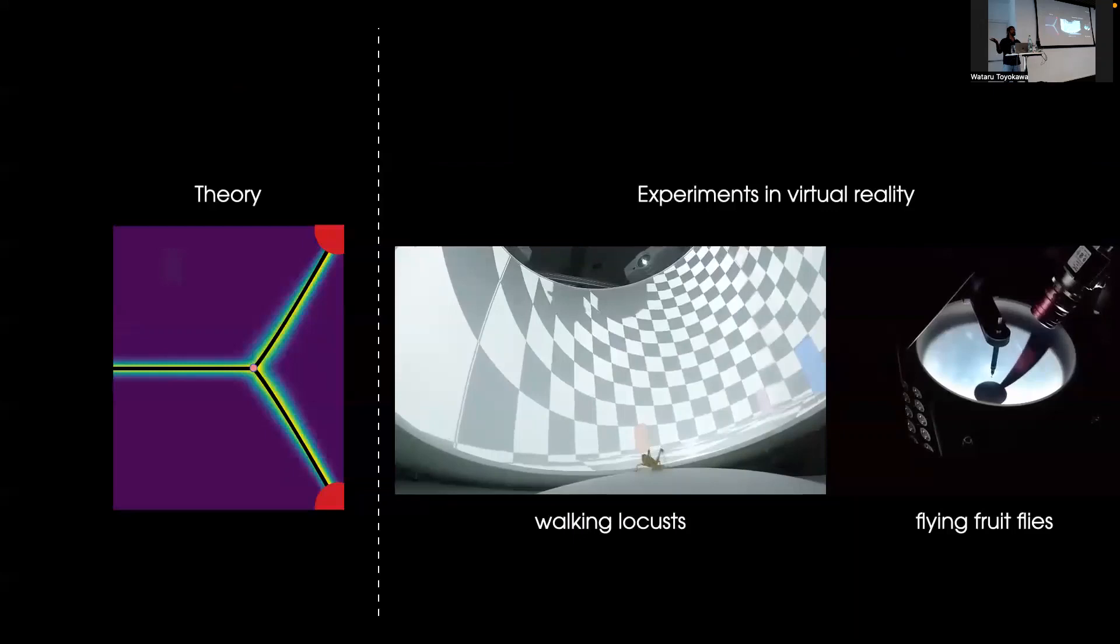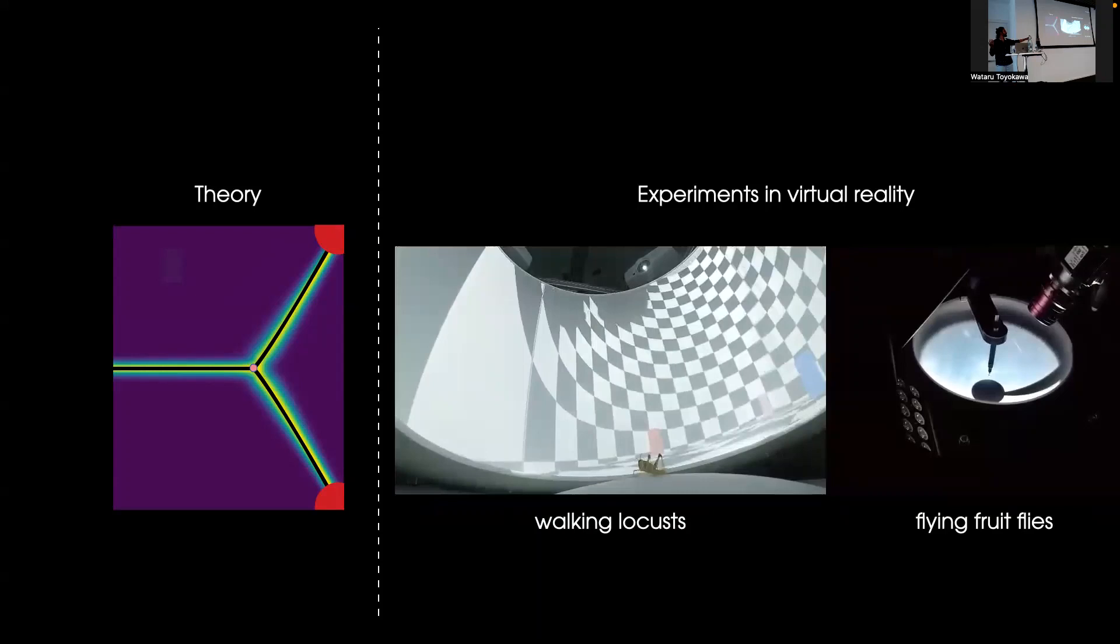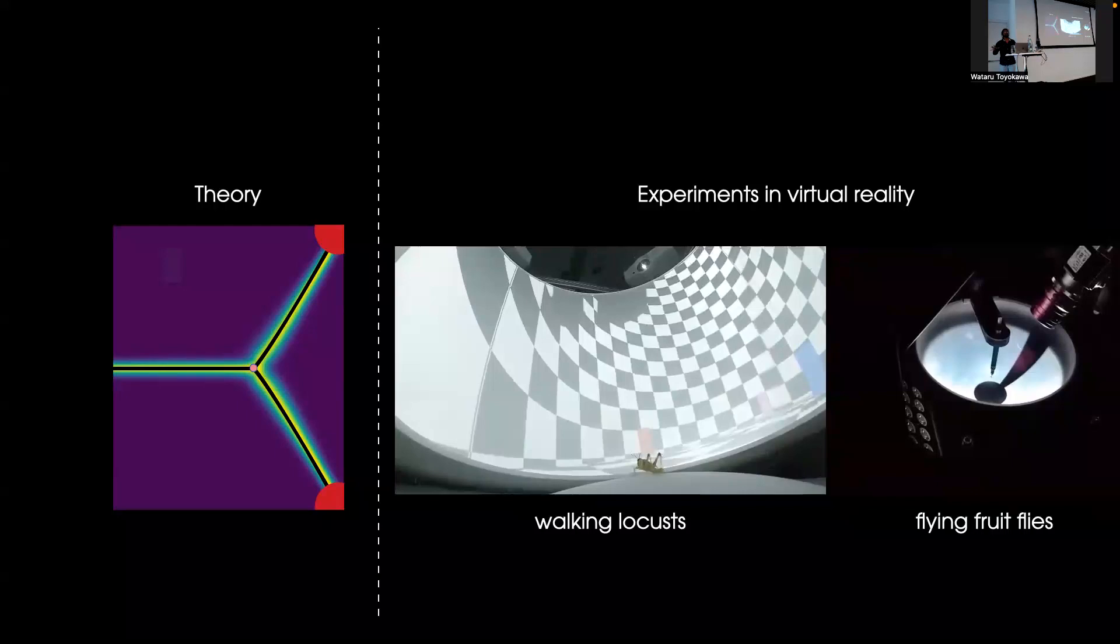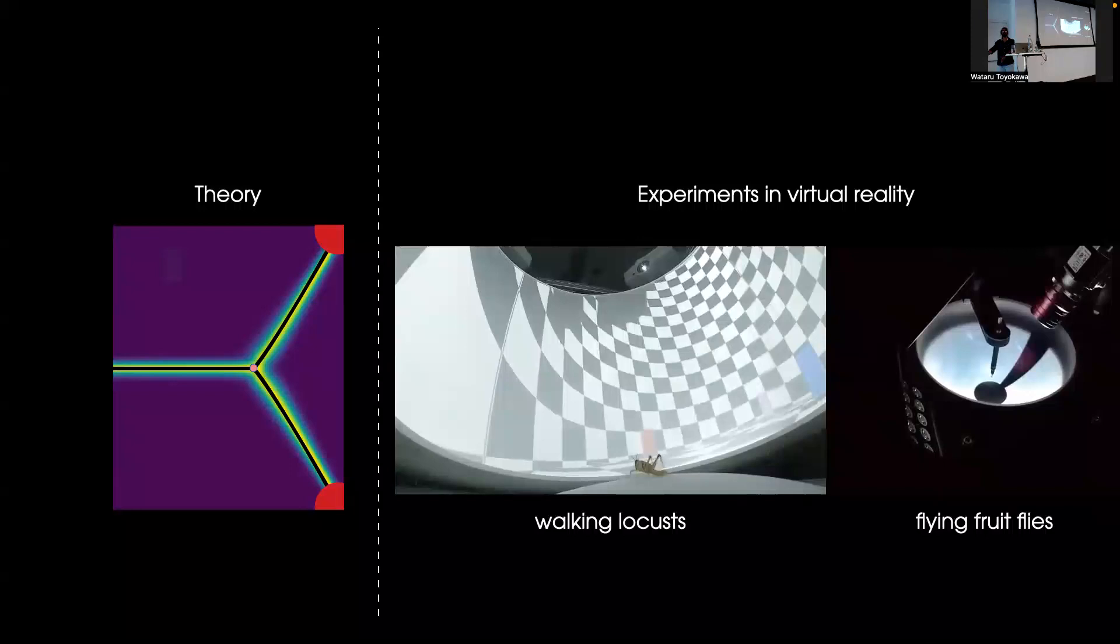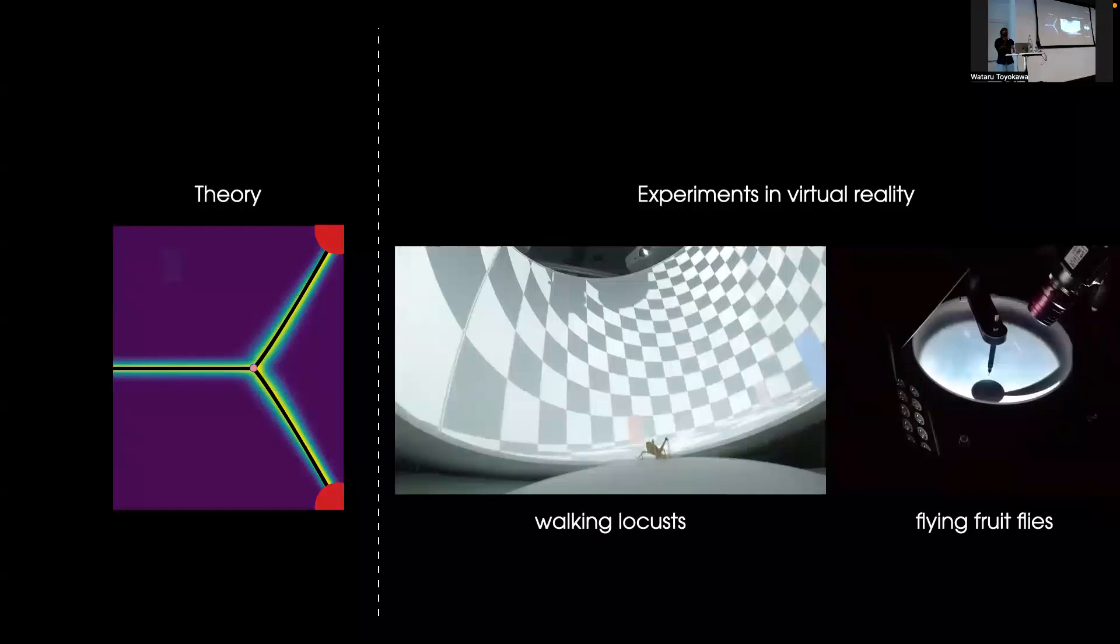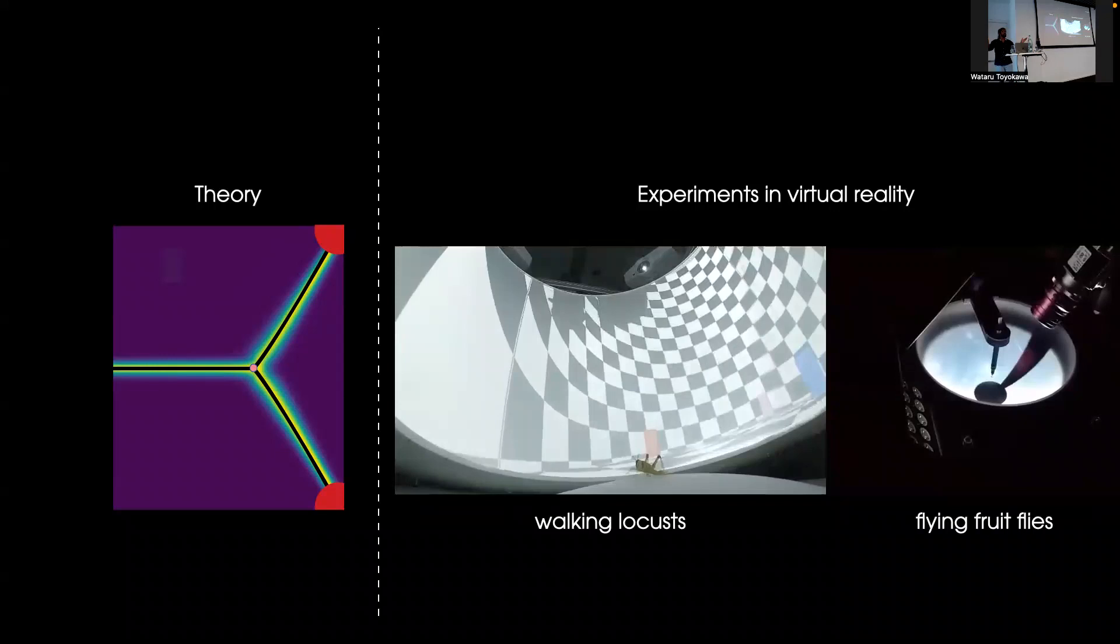The theory sounds great, but we need to test this with real animals. So we used a virtual reality system and tested these predictions with walking locusts and flying fruit flies. We presented these animals with static pillars in their environment. These insects are very easy to fool because they have an innate tendency to turn towards and walk towards high contrast vertical features in their environment.